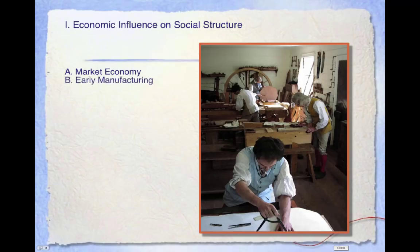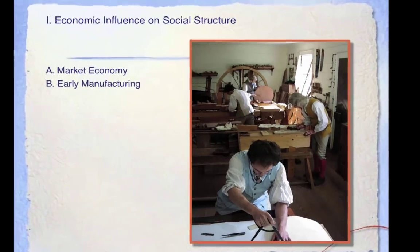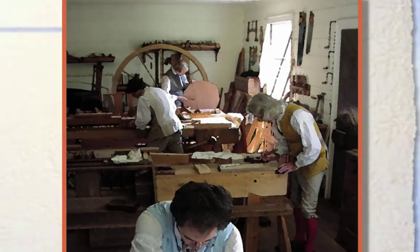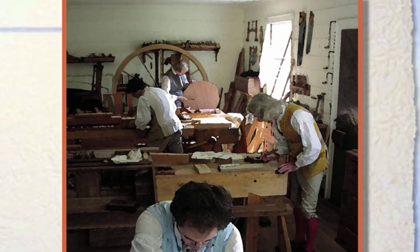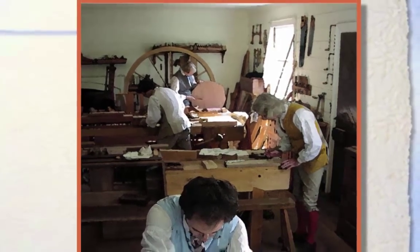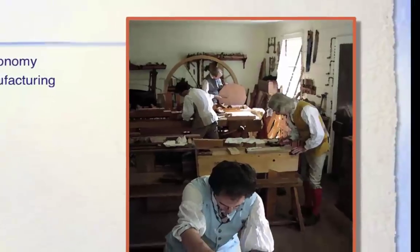Let's look at how and why the market economy expanded and how it changed social structure. This picture depicts an artisan workshop. An artisan is a person who produces usable goods like pottery, hats, shoes, cabinets, and tin products. During the 1700s, most finished products were made by artisans. This began to change in the early 1800s as the US population increased.